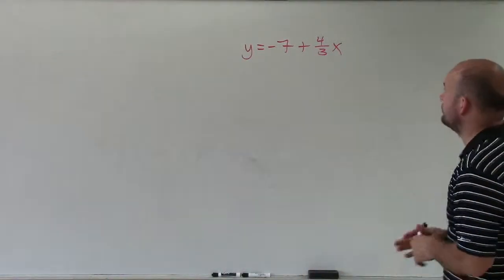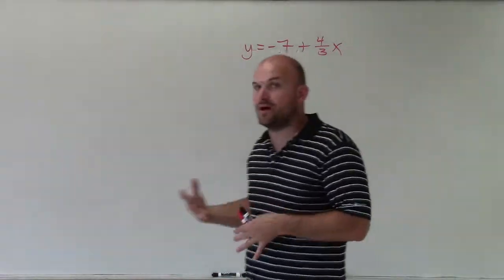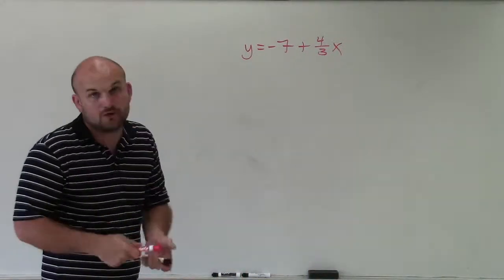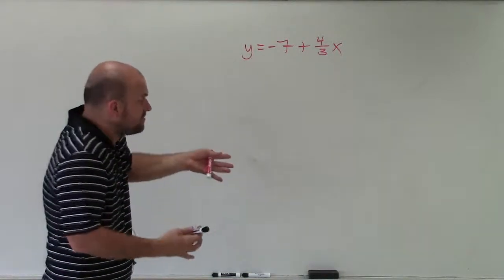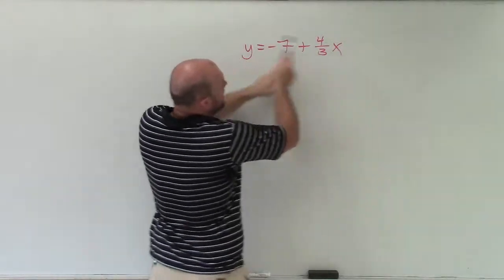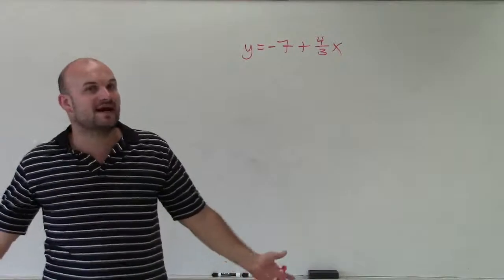And what I'd like to do is show you how to identify the slope and the y-intercept. So to do that, what I first need to do is rewrite this in slope-intercept form, which is very close to slope-intercept form, except my variable and my slope is behind my constant.